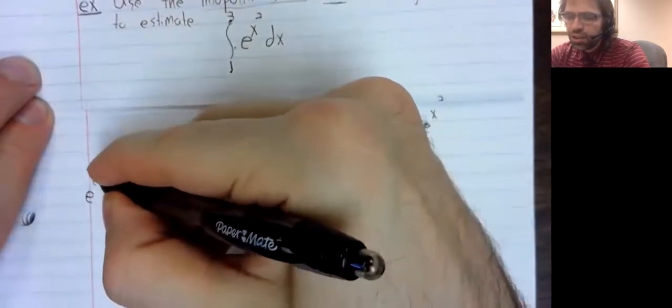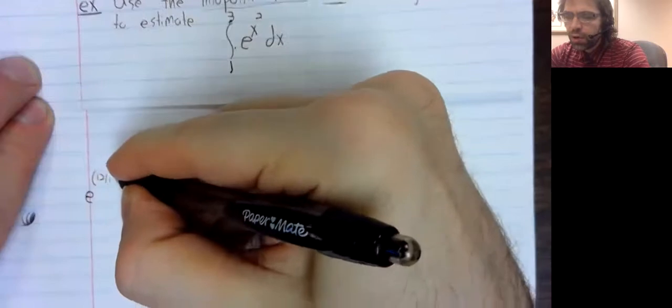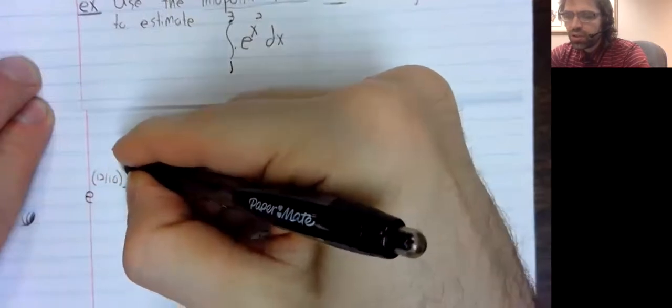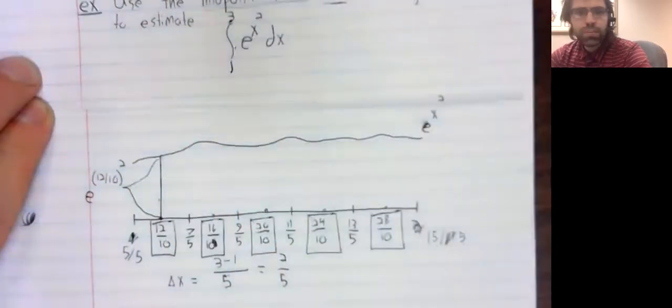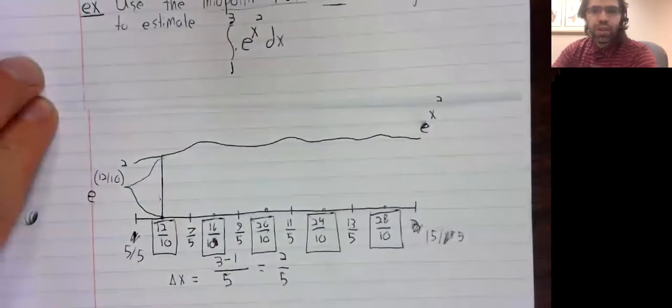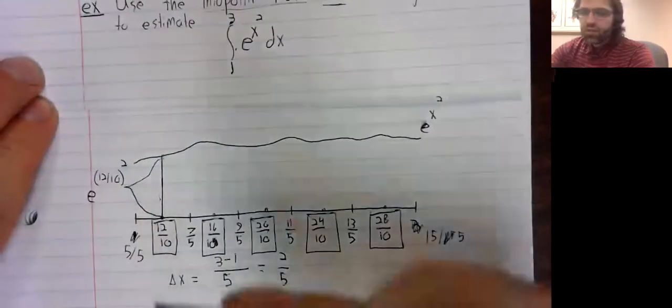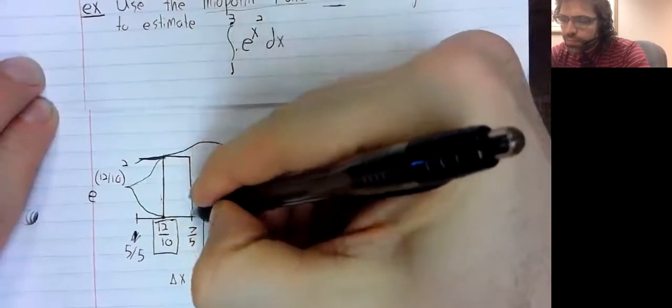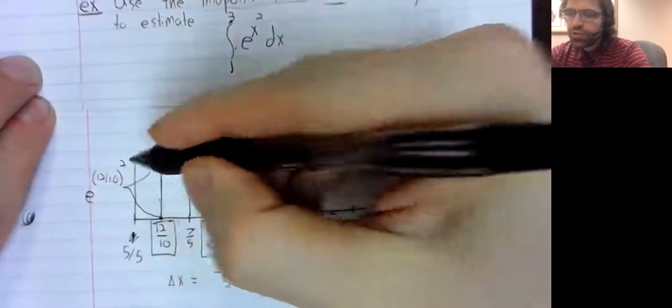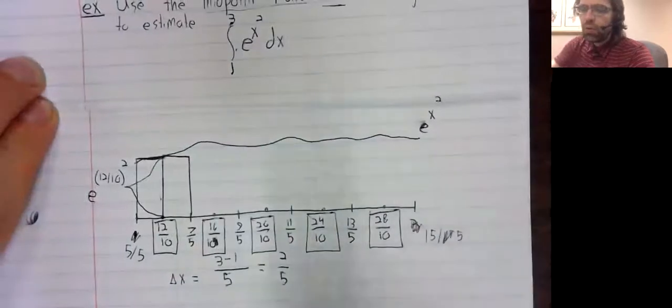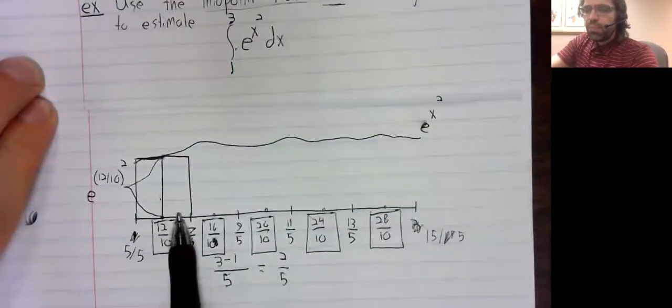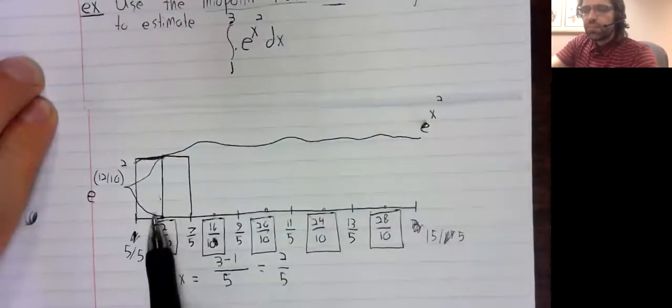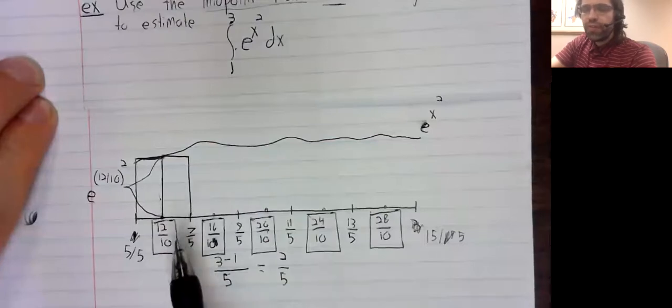So, e to the 12-tenths squared. And that's the height of this rectangle. Its base is two-fifths.